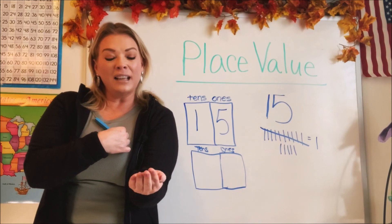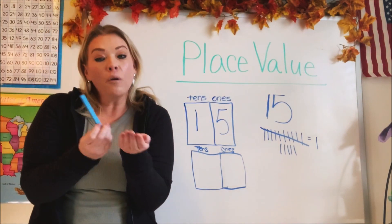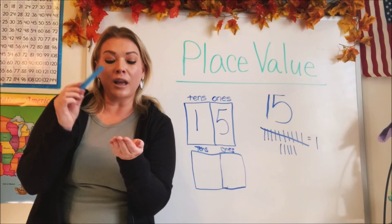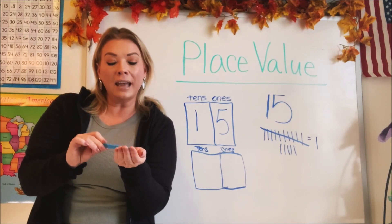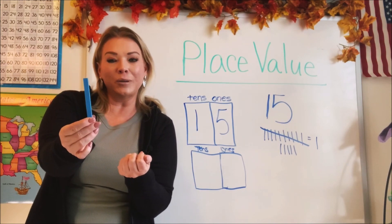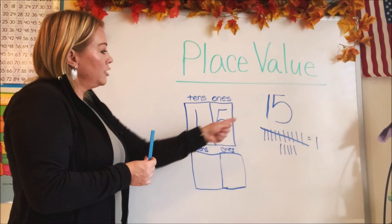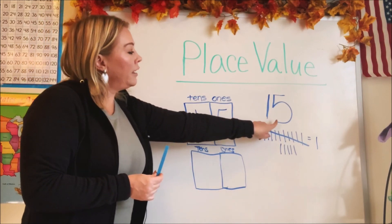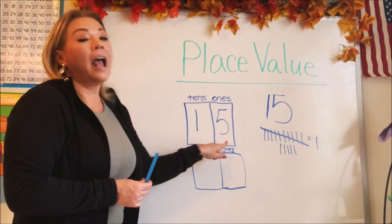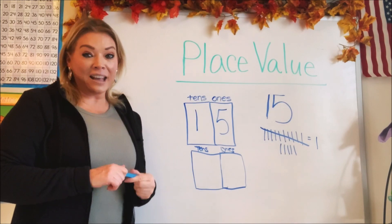So this is 10, and then we would have nine single ones. Does that make sense? I know it takes a minute to think about. But if you have these blocks in your classroom, they'll help you remember that once you get 10 ones, it turns into a tower. So our 15 was one ten and five ones.